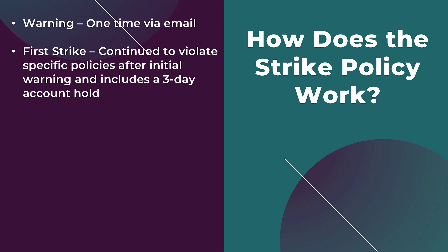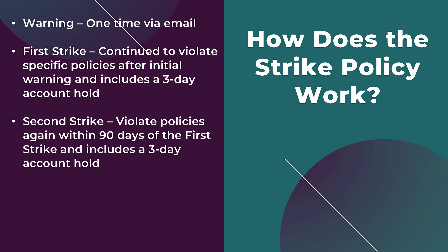Anytime your account is on hold, it cannot run any ads. However, you can still go into the account and view historical metrics. A second strike is going to occur if you continue to violate the same policy within 90 days of the first strike. Think of this as your final warning to get everything in line with the Google Ads policies.